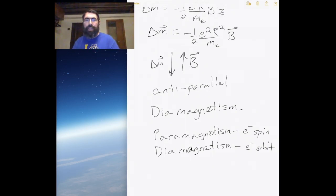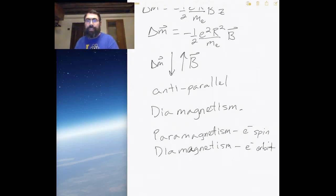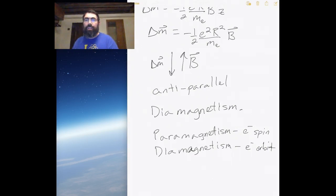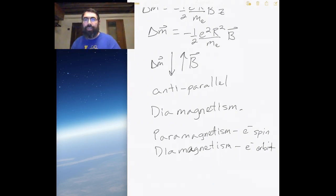We now have two sets of motions for the electron: it can either spin on its own axis, or revolve around the nucleus. These two velocities together make up the current, and that current interacts with the external magnetic field. Interestingly, the two interactions act in opposite manners.